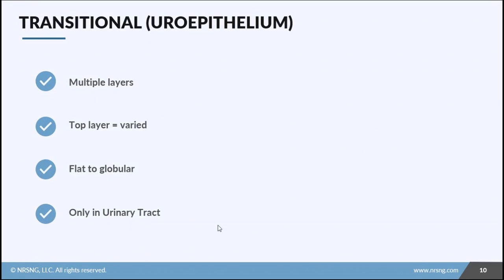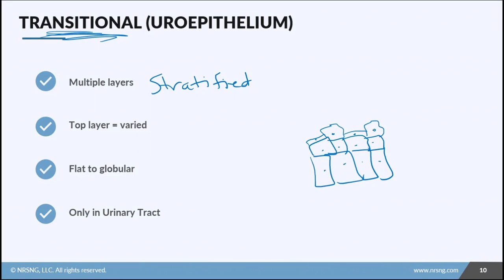The last type is called transitional or uroepithelium. It is stratified, which means it has multiple layers. But the top layer actually varies. The top layer actually transitions, hence transitional, from flat to kind of a globular shape. So you can't specifically classify it by one thing on the top layer because it's varied. The other way to remember this is the only place it is found is the urinary tract, which is also why it's called uroepithelium. Transitional because the top layer transitions from flat to globular. Uroepithelium because it's only found in the urinary tract.